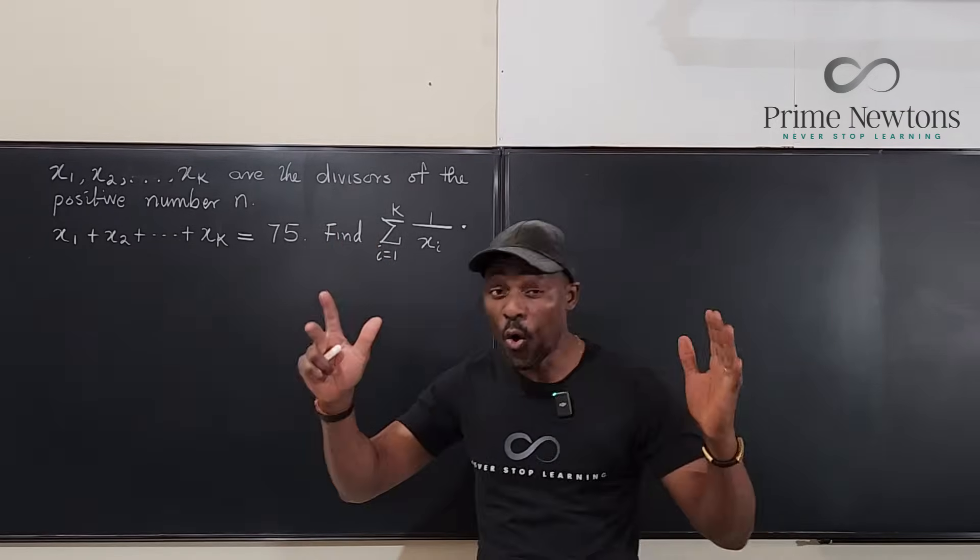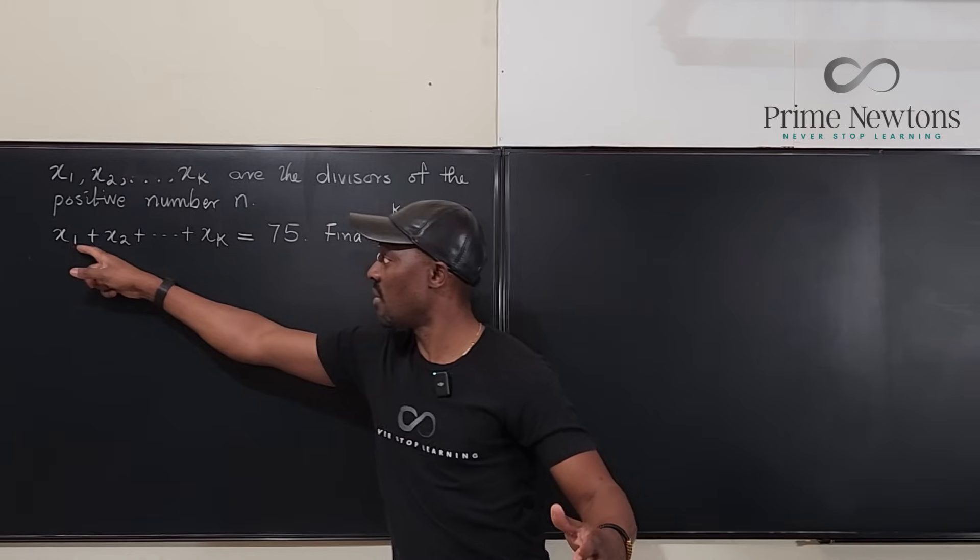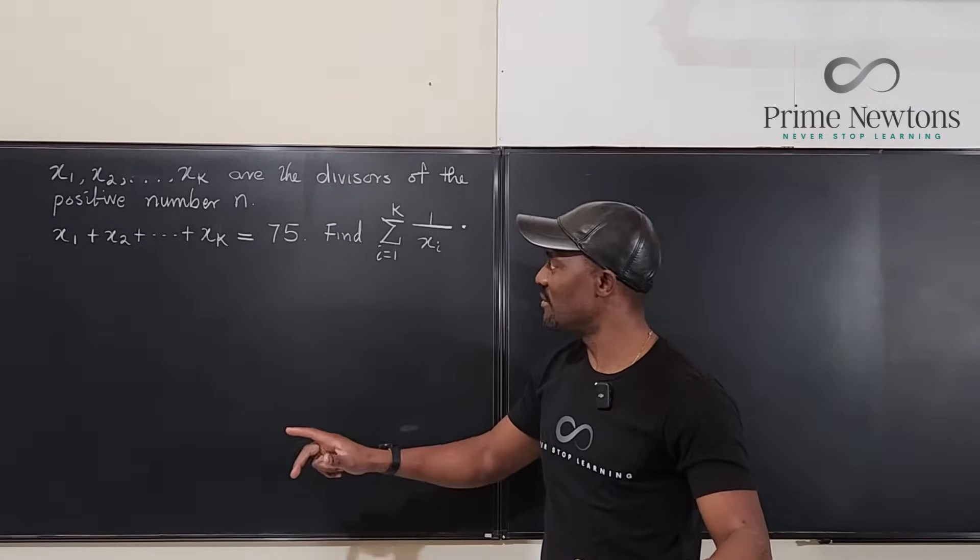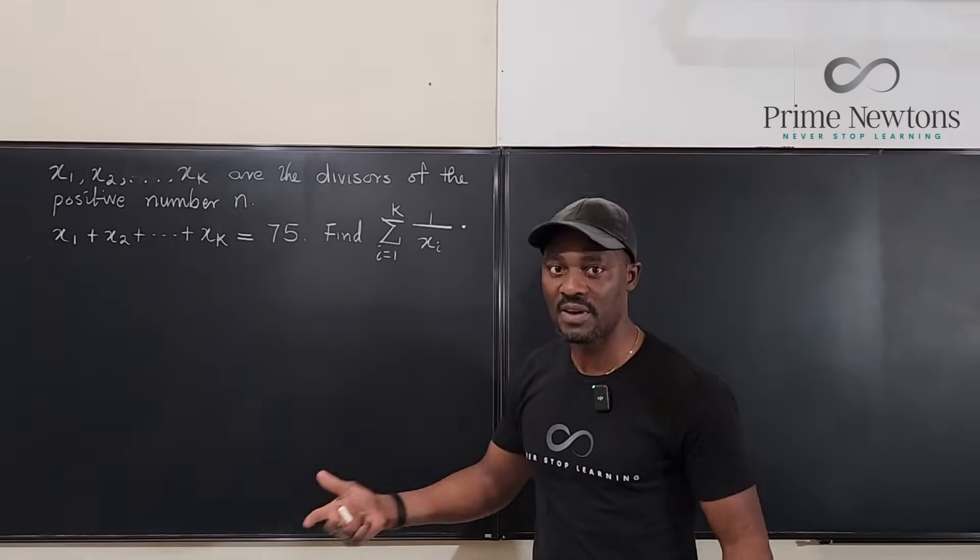Now, if you take all of these numbers, the divisors that have been listed and you sum all of them up, you're going to get 75. This question is to find the sum of all the reciprocals of the divisors.